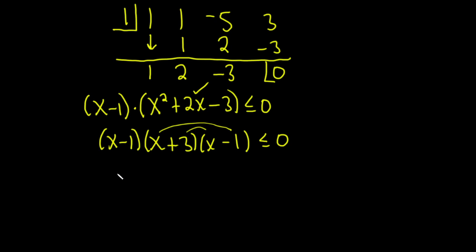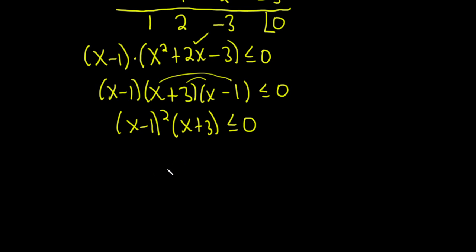And we want this to be less than or equal to 0. Look at this. We have (x - 1) twice. This is really (x - 1)²(x + 3) ≤ 0. So (x - 1)² is never going to be negative. It's never going to be negative because it's being squared. But it might be 0. And that's going to happen when x is equal to 1. And that's one of our answers in this problem. Because when x is equal to 1, we get 1 - 1, which is 0. 0² is 0. 0 times anything is 0. And 0 is equal to 0. So it satisfies the inequality less than or equal to 0.